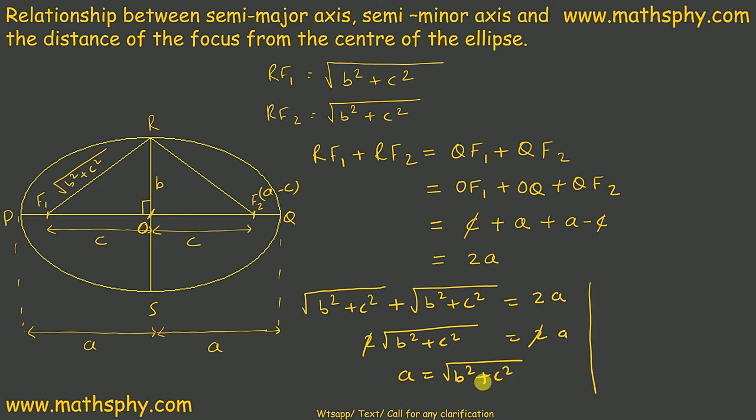Or if I take square both the sides, A square equals to B square plus C square, or